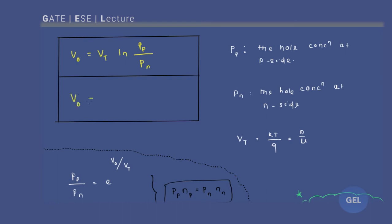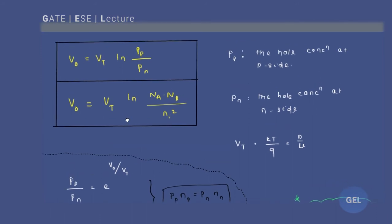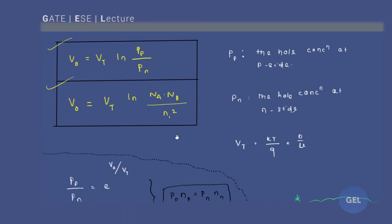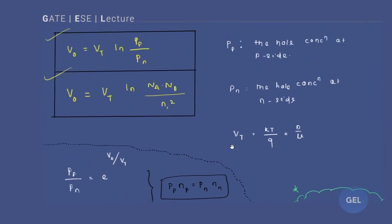There is another important formula: contact potential V₀ equals Vt times ln(Na × Nd / ni²). So you can write the formula in this way also. It can be asked in this form too. Please remember these two formulas — they are very, very important. The derivation I'll upload later.